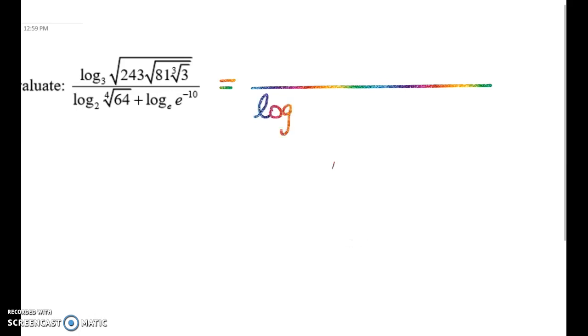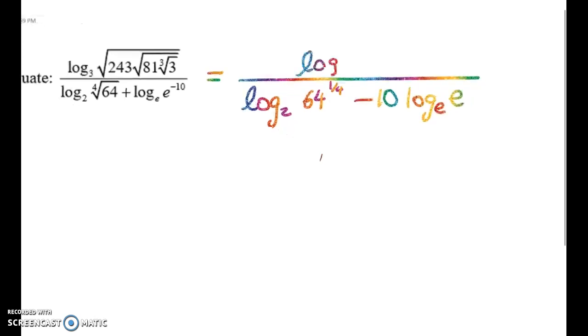So log to base 2 of 64 to the power of 1 quarter minus 10 log to base 2 of base E of E. So as we're writing that top line, we should be thinking they're all powers of 3. We'll do something with fractional powers in there as well.